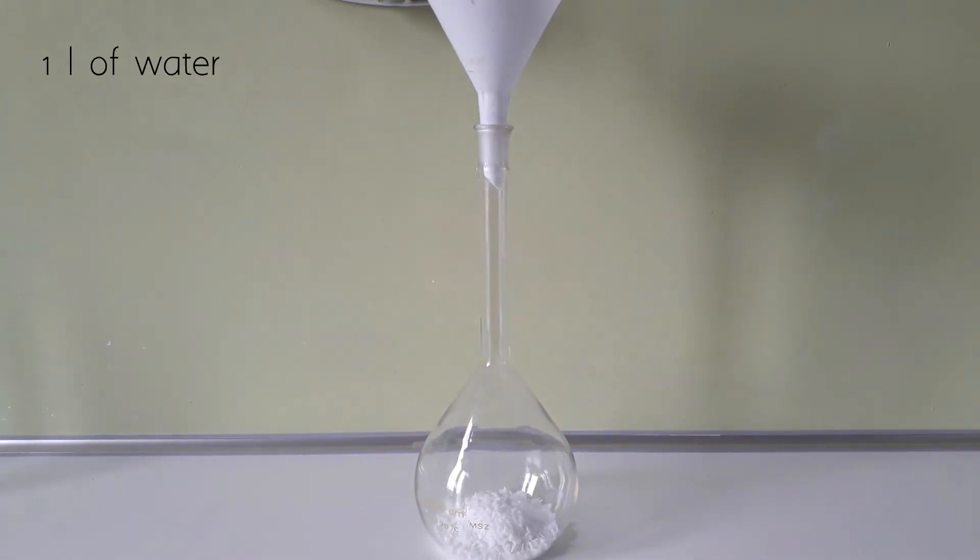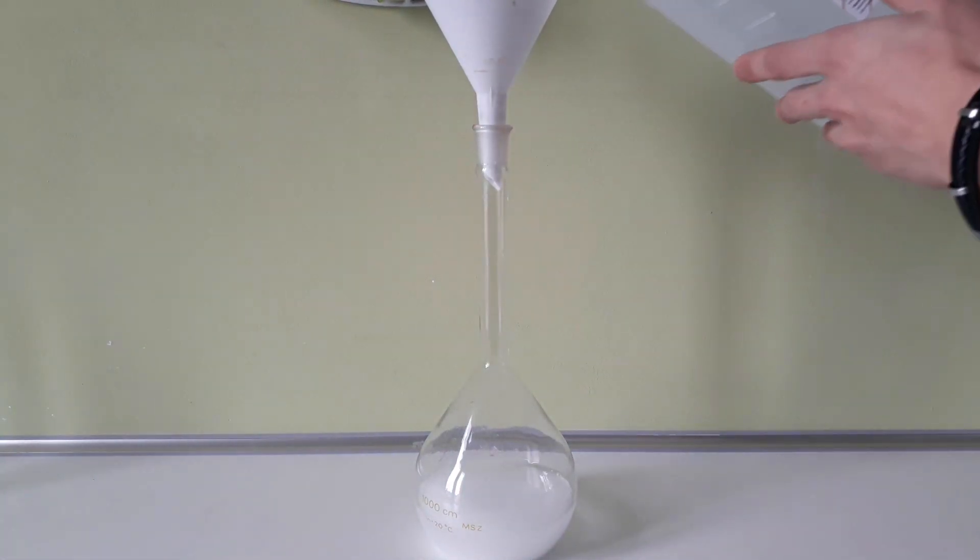To make it I use about 1 liter of water and 60 grams of potassium hydroxide. The amount of hydroxide determines the rate of reaction with the aluminum foil, which is my solid reagent.